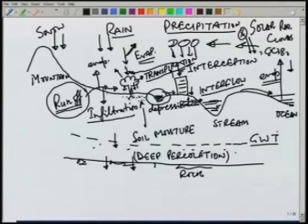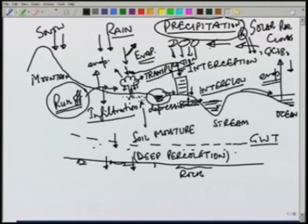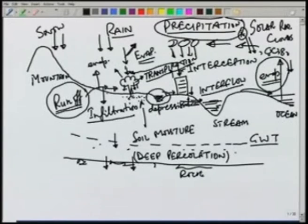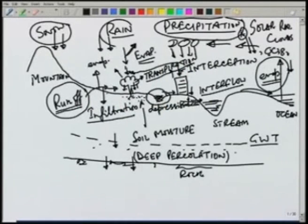Various components of the hydrologic cycle can be thought of as precipitation, which can be thought of as driving all the flow, although the precipitation comes from evaporation. So we can start from anywhere in the cycle. Let us start from the precipitation. Precipitation, as we have seen, can be in the form of snow or rain. Let us first look at various forms of precipitation.